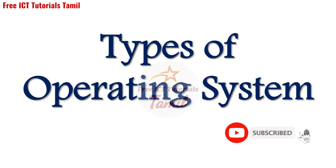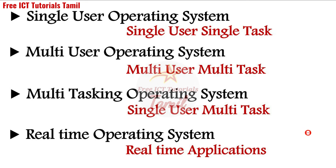Four types of operating systems are commonly used. They are: single-user single-task operating system, multi-user multi-task operating system, multitasking operating system (single-user multi-task), and real-time operating system.